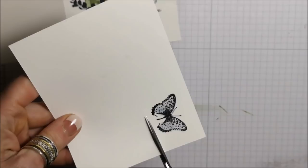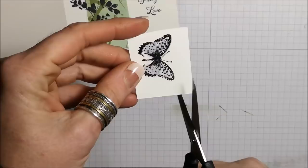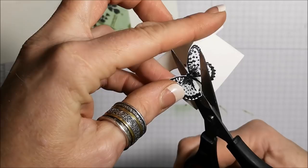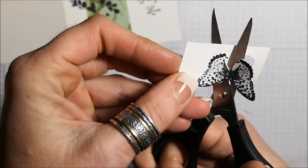And just cut this out. I'm not going to worry about cutting out the antennas. That's why I stamped the first butterfly on there first. You know what? I'm not going to worry about cutting his little body out either. So I'm going to cut right around that. I'm going to put that on with the glue dot.